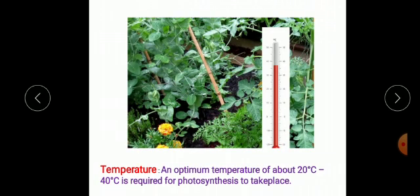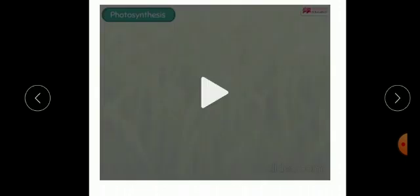Apart from all these requirements, an optimum temperature of about 20 degrees Celsius to 40 degrees Celsius is required for photosynthesis to take place. Let us watch this video to understand the different requirements for photosynthesis.